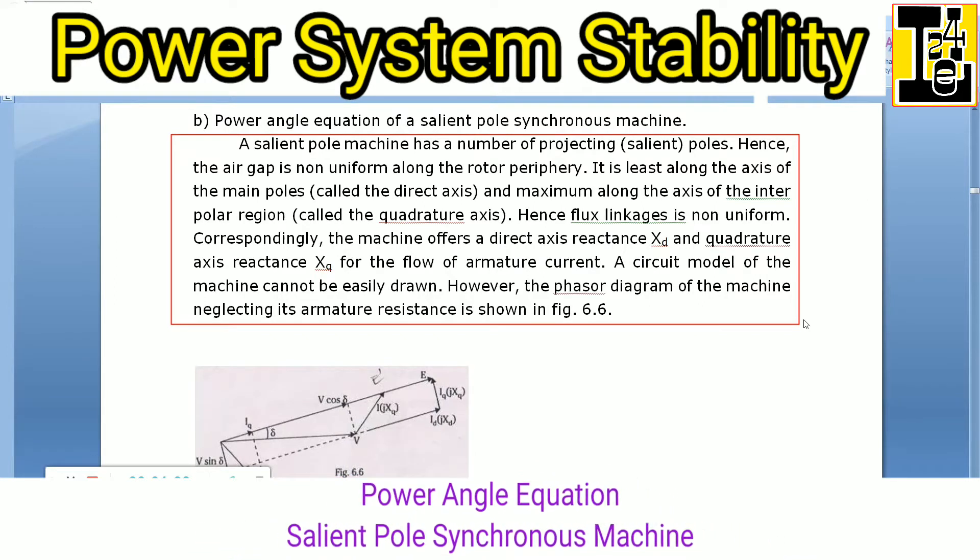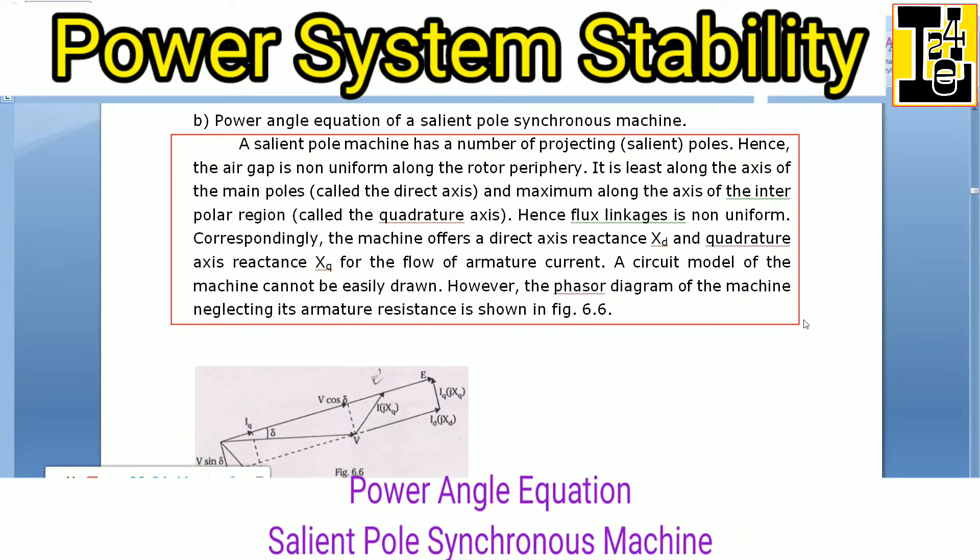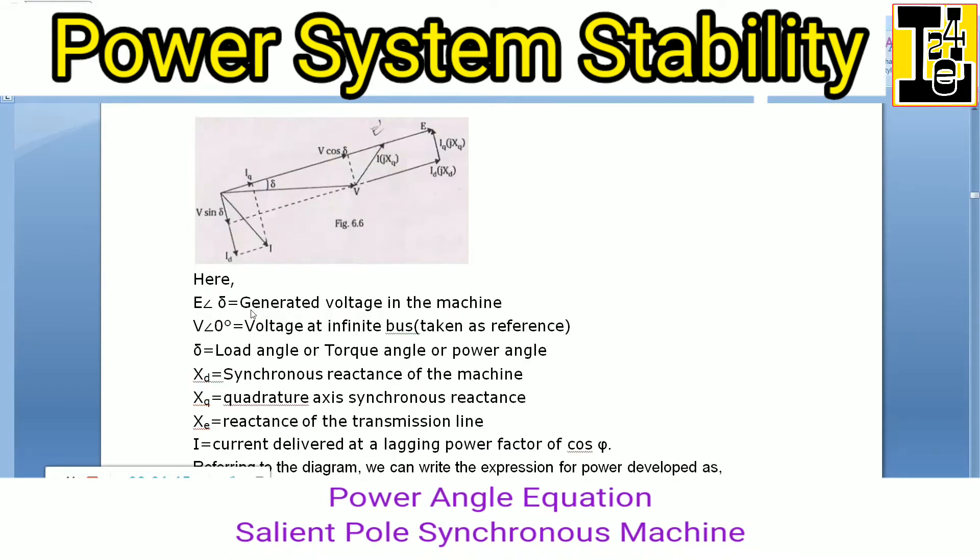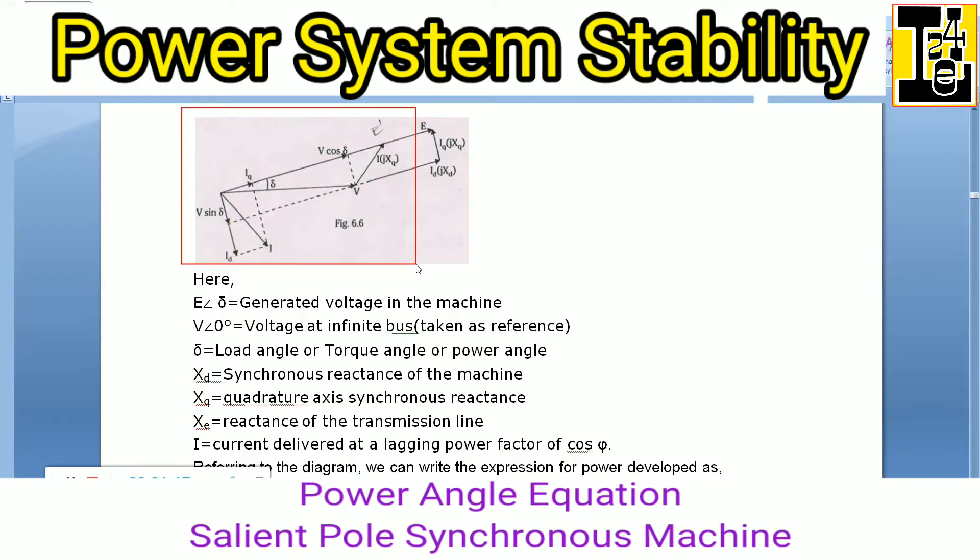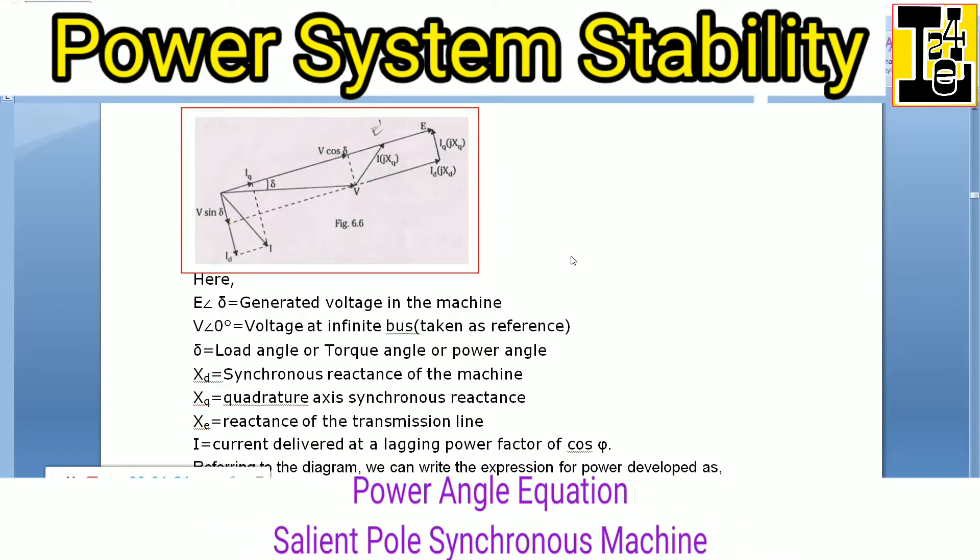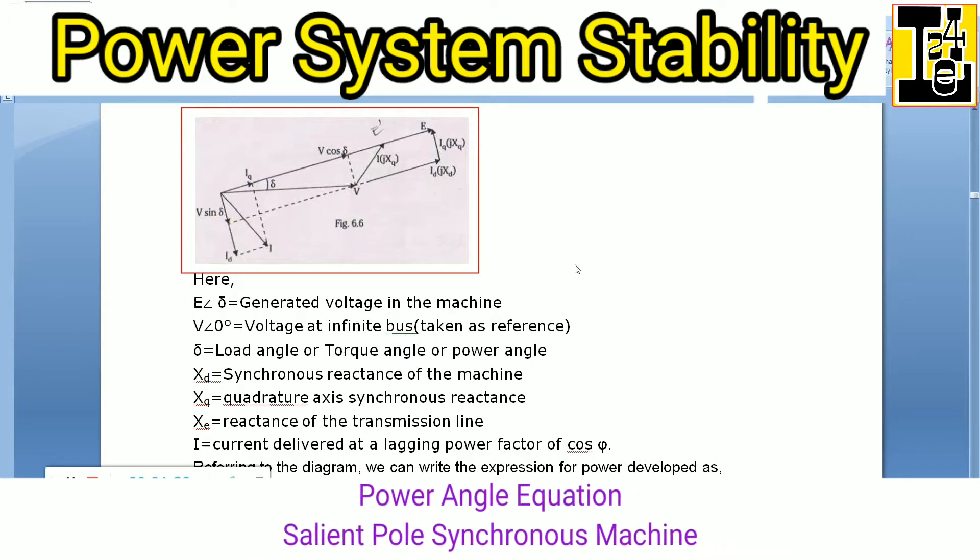However, the phasor diagram of the machine neglecting its armature resistance can be shown here. You can observe the phasor diagram for a salient pole synchronous machine.